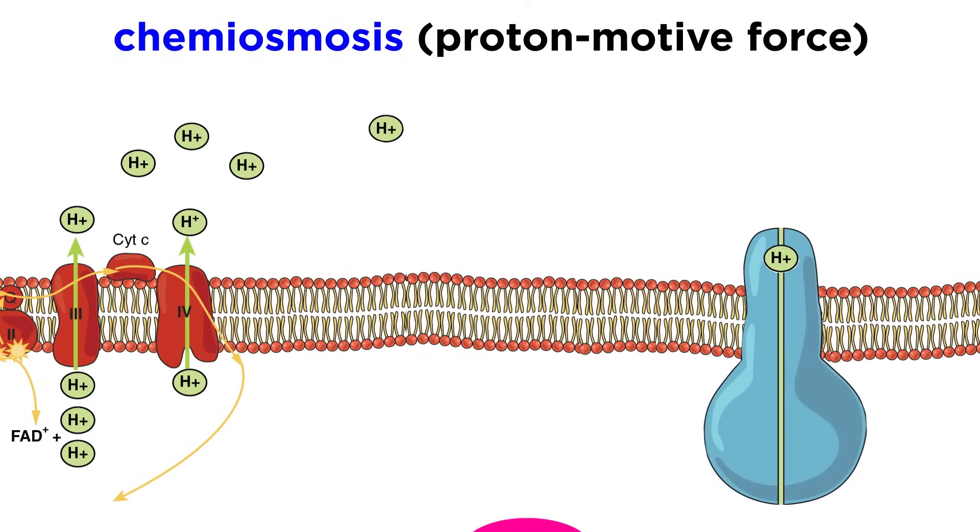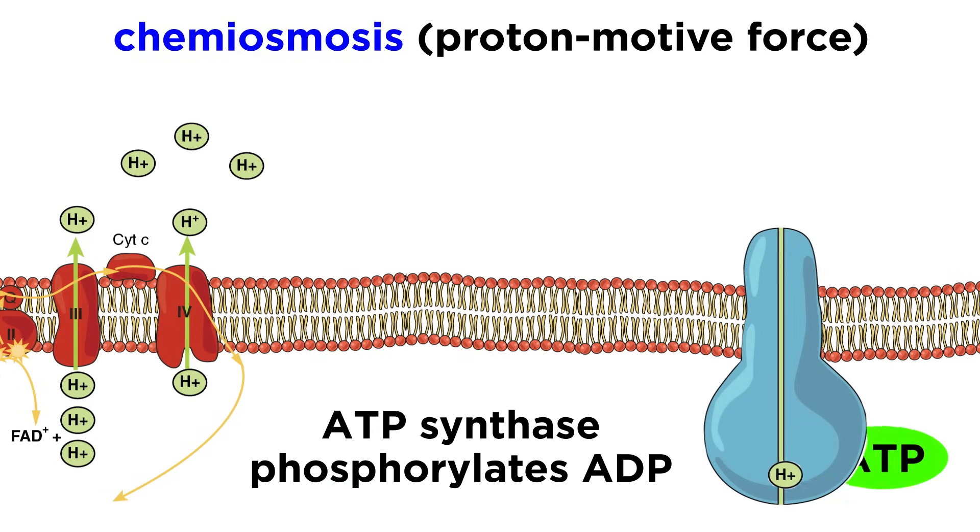This process is called chemiosmosis, and because the gradient is able to do work through chemiosmosis, we also call this the proton motive force, and it is these protons that power ATP synthase in phosphorylating ADP to generate ATP.